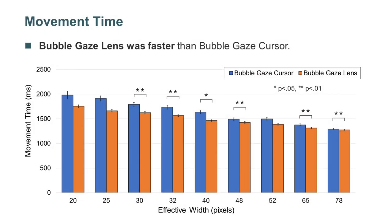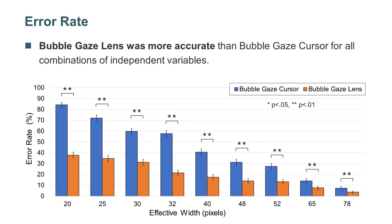The result of study two showed that the bubble gaze lens was faster than the bubble gaze cursor, and was more accurate for all combinations of independent variables. Bubble gaze lens reduced the error rate by 54.0%.